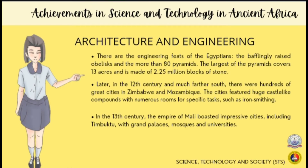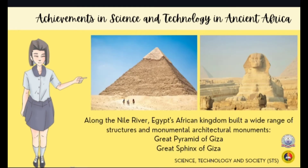Ancient Africa also achieved great things in architecture and engineering. Various past African societies created sophisticated built environments, including remarkably raised obelisks and more than 80 pyramids. The largest of the pyramids covers 13 acres and is made of 2.25 million blocks of stone. In the 12th century, farther south, there were hundreds of great cities in Zimbabwe and Mozambique, featuring huge castle-like compounds with numerous rooms for specific tasks such as iron smelting. In the 13th century, the Empire of Mali boasted impressive cities, including Timbuktu with grand palaces, mosques, and universities. Along the Nile River, Egypt's African kingdom built a wide range of structures and monumental architectural works, including the Pyramid of Giza and the Great Sphinx of Giza.